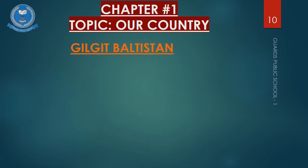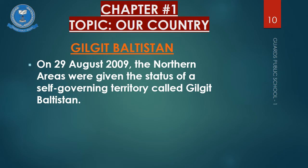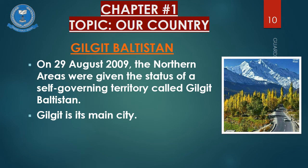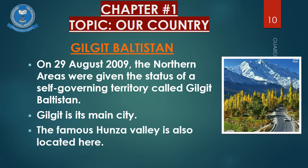Gilgit Baltistan: on 29 August 2009, the northern areas were given the status of a self-governing territory called Gilgit Baltistan. The territory of Gilgit Baltistan is administered by the government of Pakistan and Gilgit is its main city. The famous Hunza Valley is also located in Gilgit Baltistan.